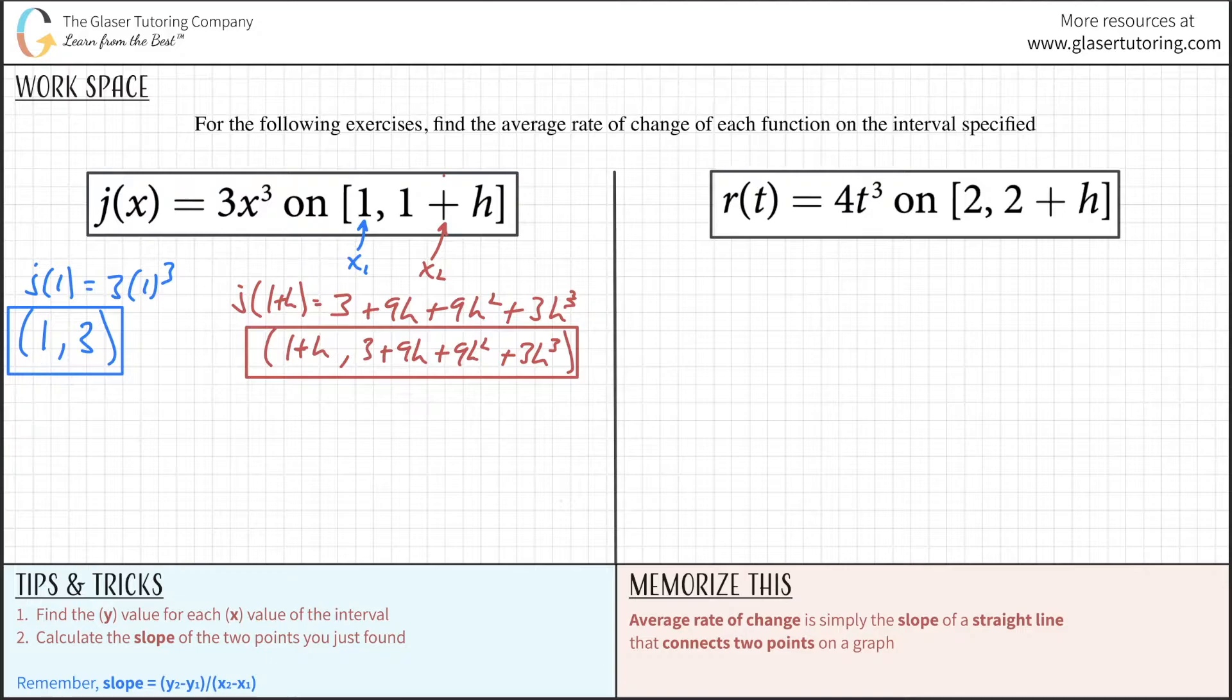We called this x1 and this will be y1. We also called this x2 and this will be y2. Now we have our slope formula y2 minus y1. So take the y2 value: (3 plus 9h plus 9h squared plus 3h cubed) and subtract the y1 value of 3.